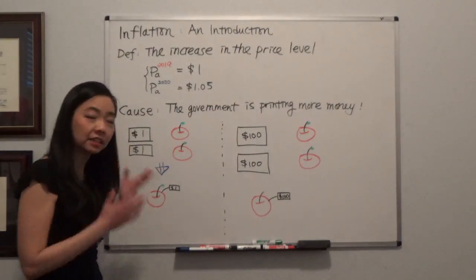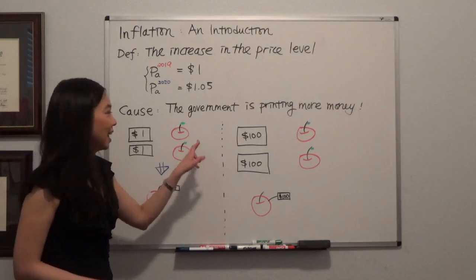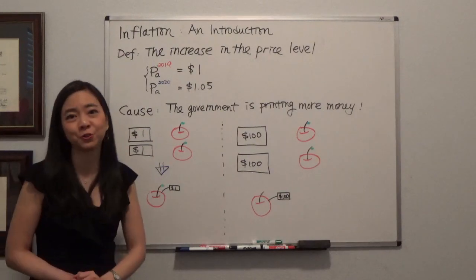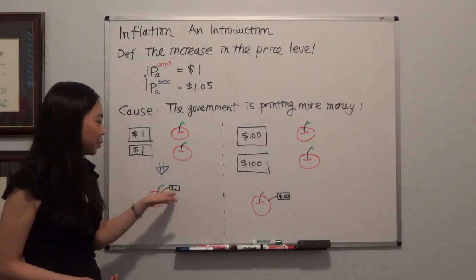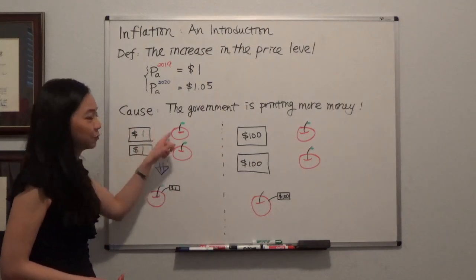Suppose in this economy we only have two apples, and there are two dollars in circulation. Then the price of the apple will be a dollar, so one dollar for each apple.